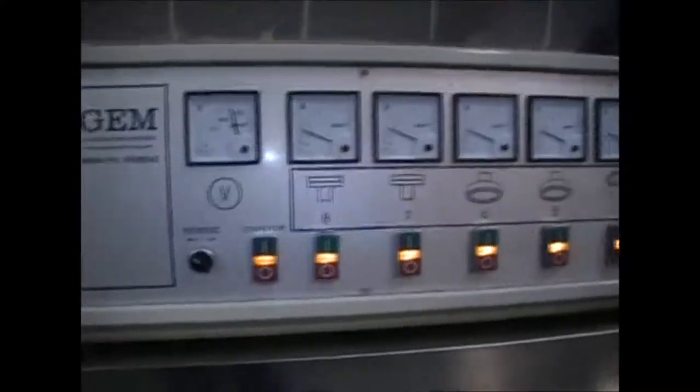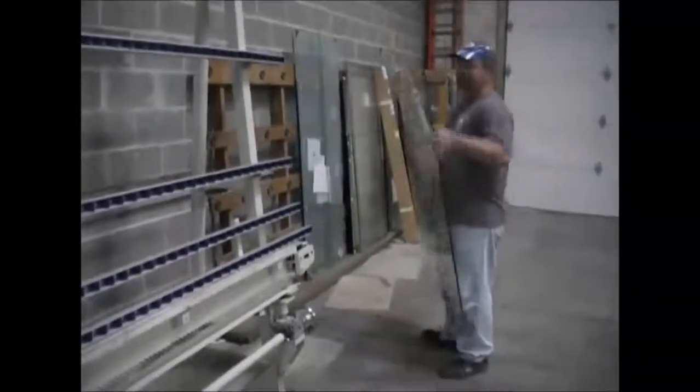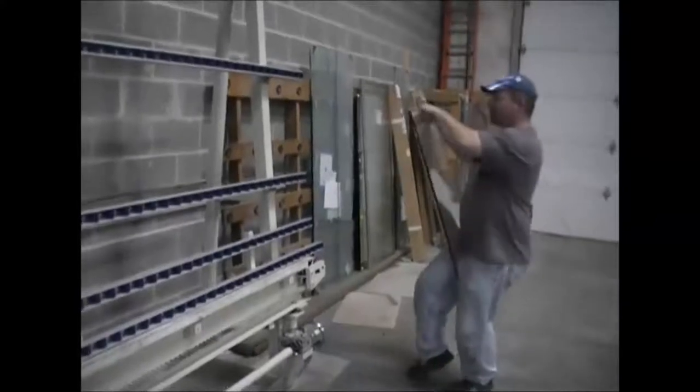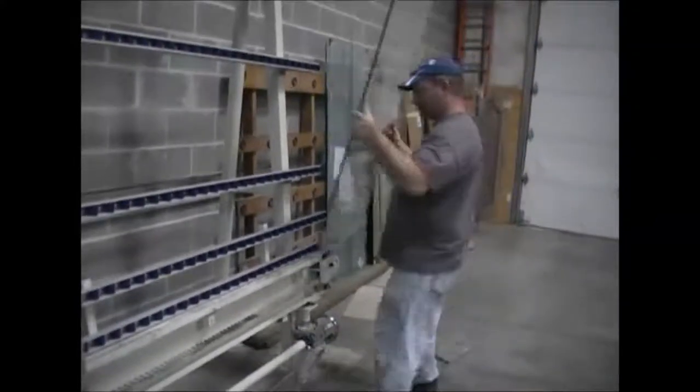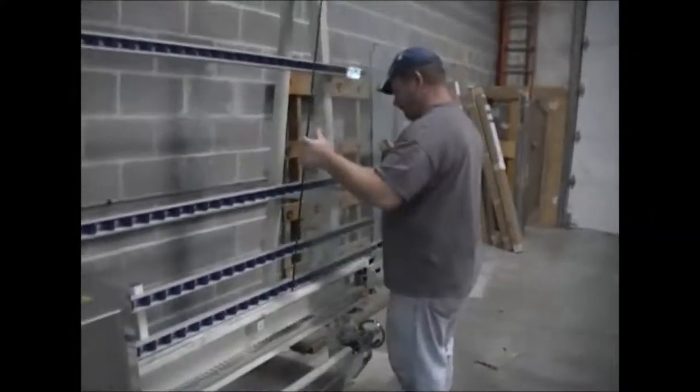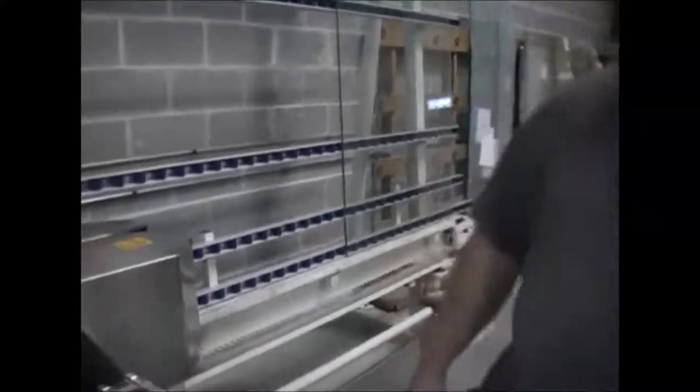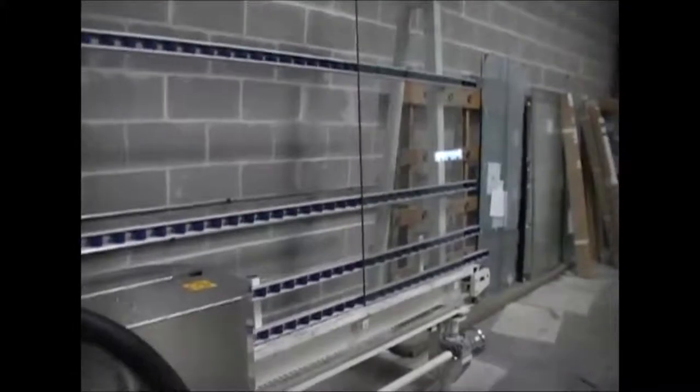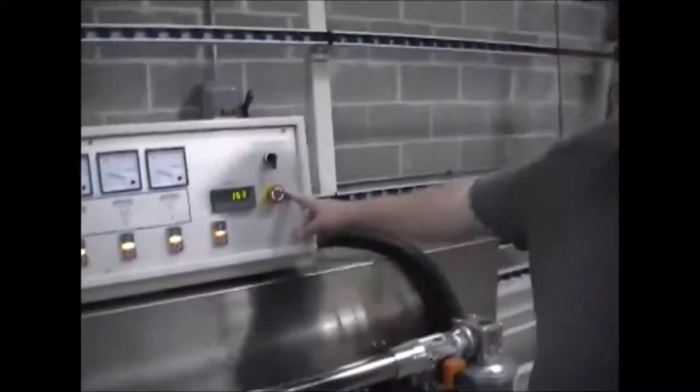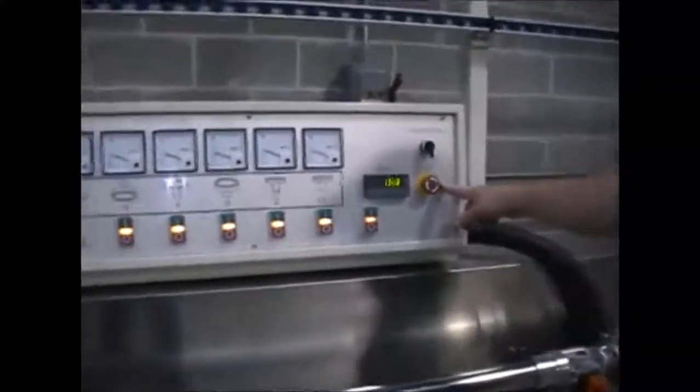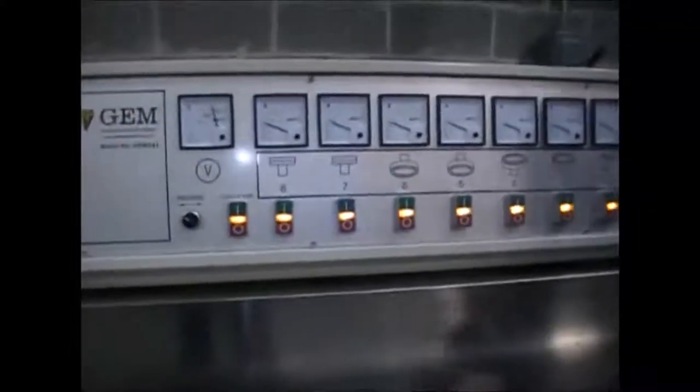That's basically it. You can load up the glass now. Usually you run pieces one up, one down. Run the glass in. But we're going to stop the machine now and show you how to shut the machine off. You can do it one of two ways.